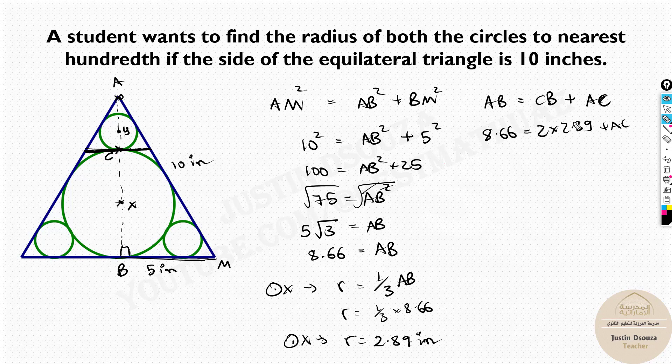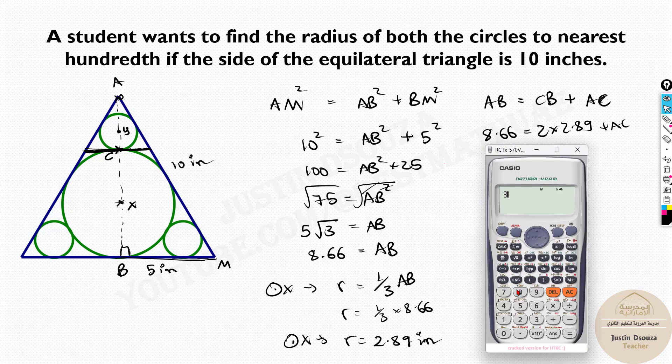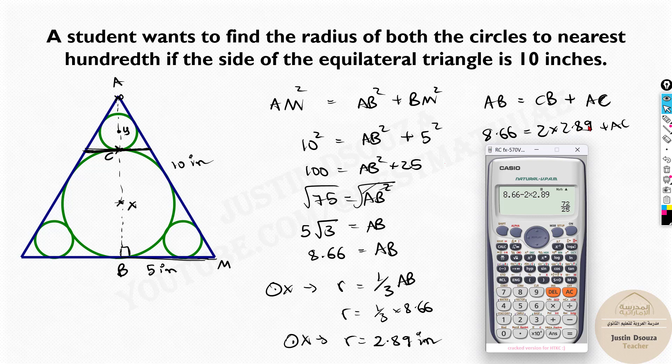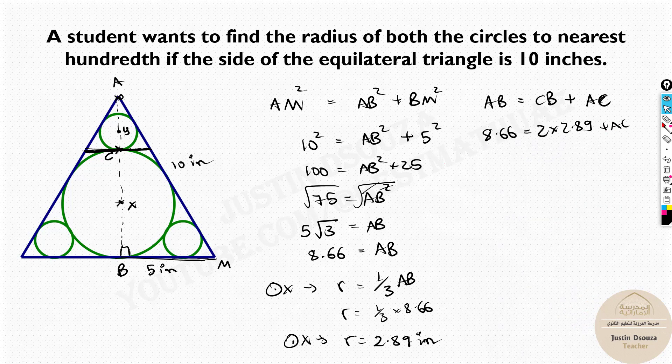So all you need to do is take this to the other side and solve. You can directly put it in the calculator. It will be 8.66 minus 2 times 2.89.